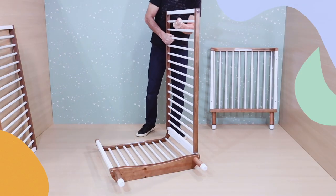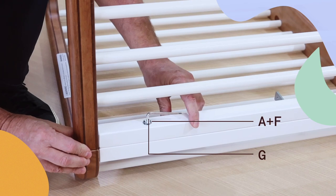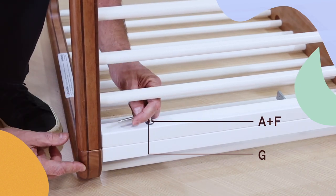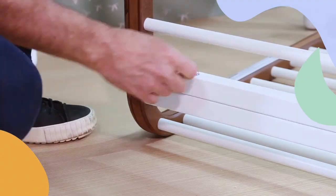Once we're done with that, attach the Full Crib side panels, piece 2, using bolt A and washer F and ensure the pieces are aligned. You can start screwing the bolt in with your hand and then finish using the Allen wrench to secure the bolts.